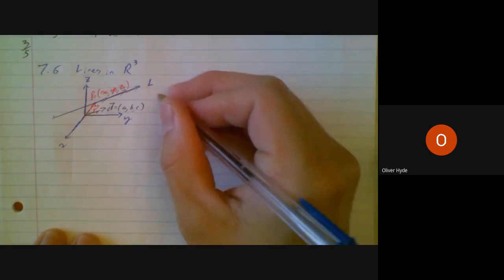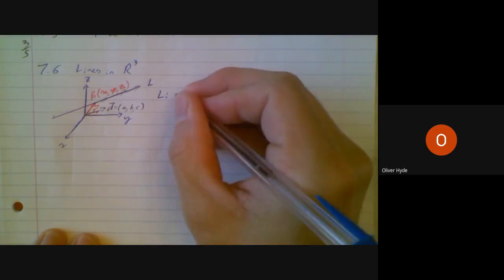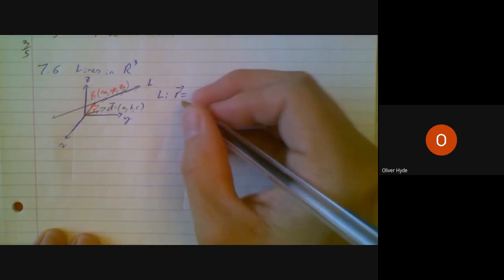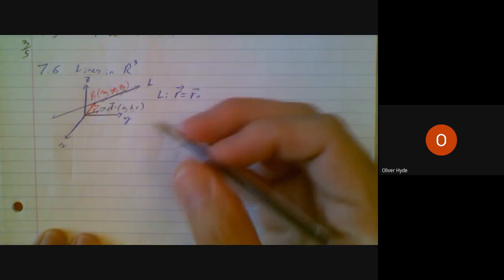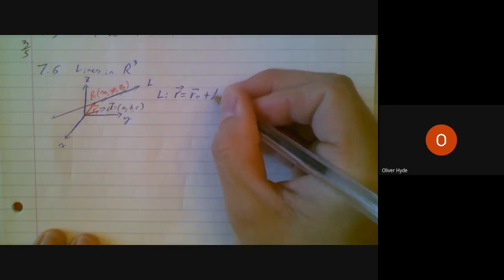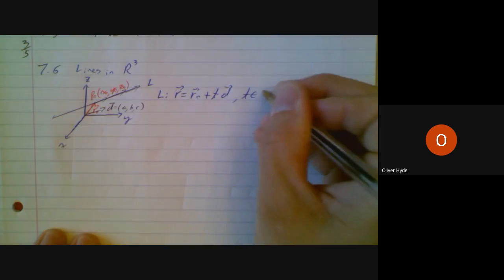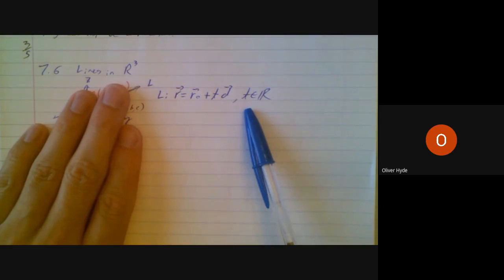On to this position vector, I will add an infinite number of scalar multiples of that direction vector. So that gets me a vector equation that a position vector to every single point on this line is a position vector to some point on this line, plus an infinite number of scalar multiples of the direction vector. This is exactly the equation for a line in R².